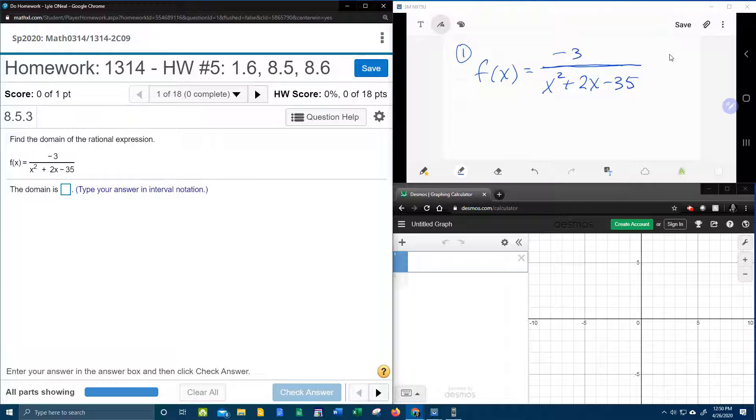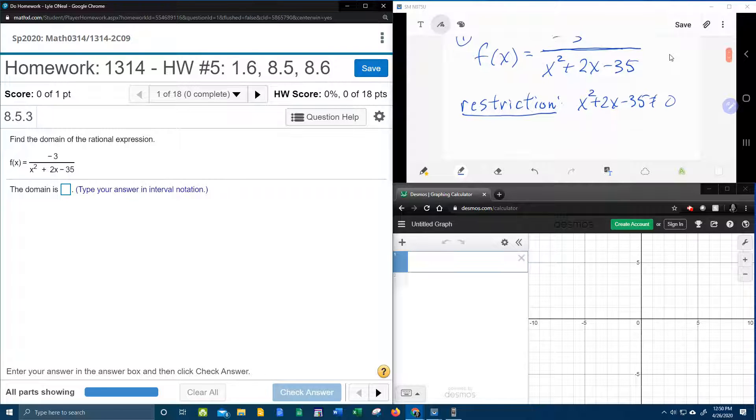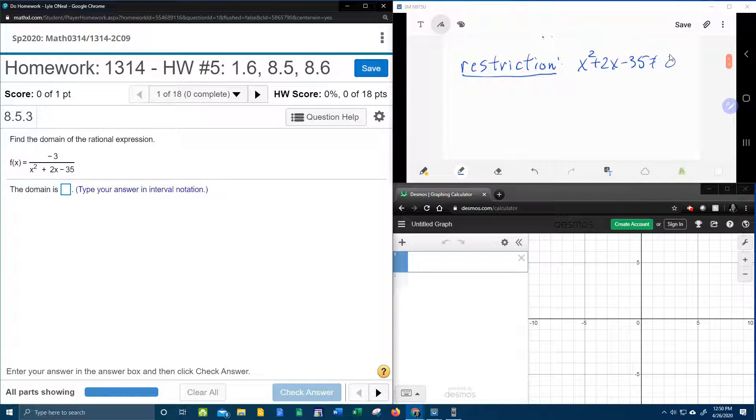So in order to find the domain, we're first going to have to find the restriction. Here's the restriction. The restriction says whatever the denominator is, it cannot be 0. So we're going to set that not equal to 0 and then we're going to solve for x, and then we'll know the numbers that x can't be.